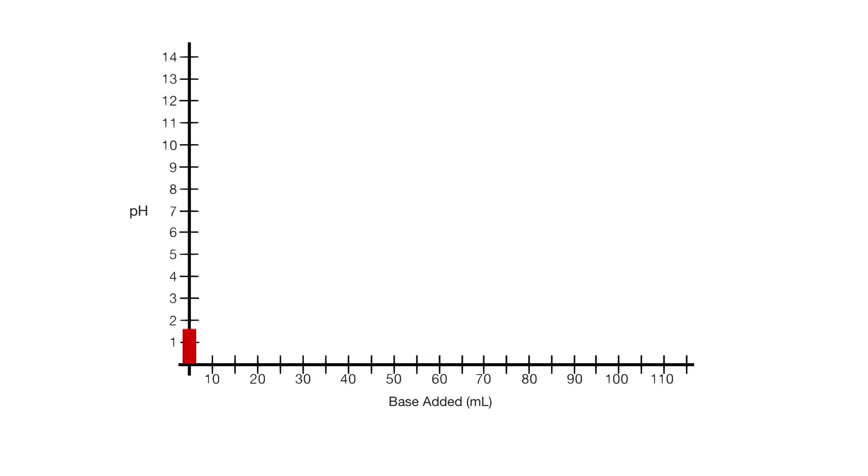Titration curves are formed on graphs with increasing pH on the y-axis and increasing base titrant added on the x-axis.